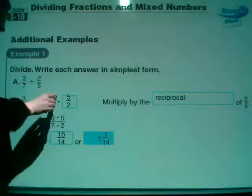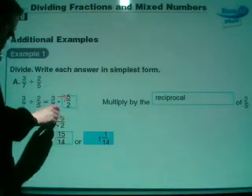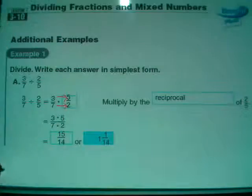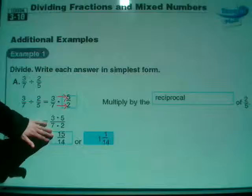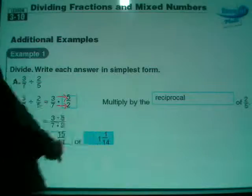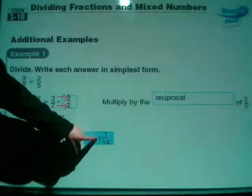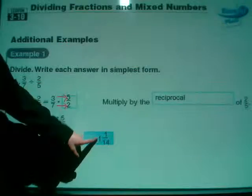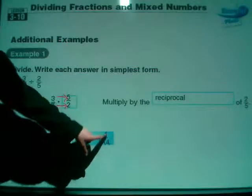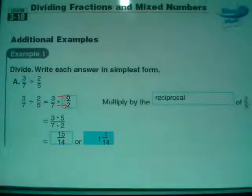3 times 5 gives us 15, and 7 times 2 gives us 14. That's 15 fourteenths, or if you want to write it as a mixed number, 1 and 1/14. 14 goes into 15 one time. 1 times 14 is 14, but I need to get to 15, so the remainder is 1, and the denominator stays 14.